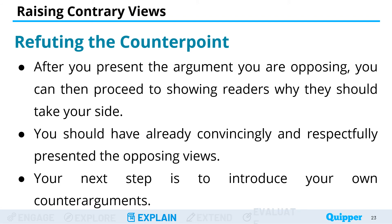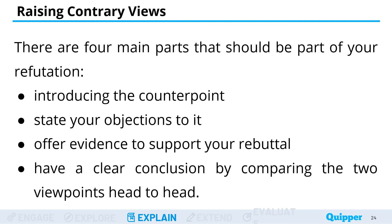Refuting the counterpoint means you prove that a statement or theory is wrong or false. After you present the argument you are opposing, you can proceed to showing readers why they should take your side. There are four main parts of a refutation: first, introduce the counterpoint; second, state your objections to it; third, offer evidence to support your rebuttal; and fourth, have a clear conclusion by comparing the two viewpoints head to head.